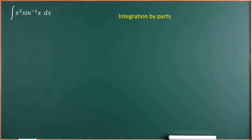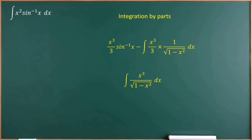Using the integration by parts method, we can get x cubed over 3 times sin inverse x, minus the integral of x cubed over 3 times 1 over root 1 minus x squared. To simplify the integral of x cubed over root 1 minus x squared, we can use the equation: integral of f(x) to the power of n times f'(x) equals f(x) to the power of n plus 1 over n plus 1.